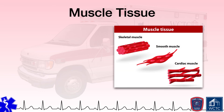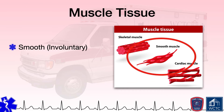Muscle tissues are classified by their anatomic location and function. The first type is smooth muscle tissue, also known as non-striated involuntary muscle tissue. The cells within the tissue are long, spindle-shaped, and reside within hollow internal organ walls. These muscle tissues are called involuntary because they typically cannot be controlled through conscious thought or effort. These tissues are responsible for constricting the lumen of blood vessels, moving fluid through the body, processing and digesting food, and eliminating waste products. Smooth muscle tissue can be found in the intestines, stomach, esophagus, blood vessels, and uterus.